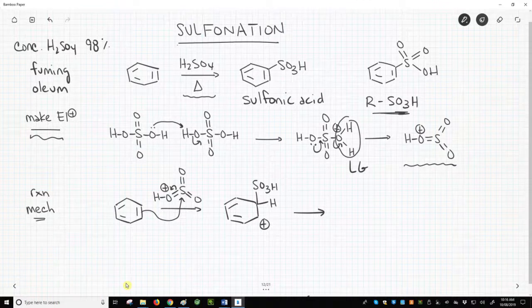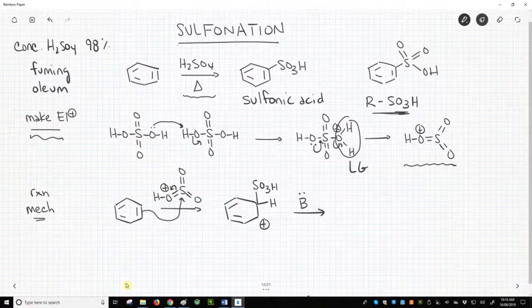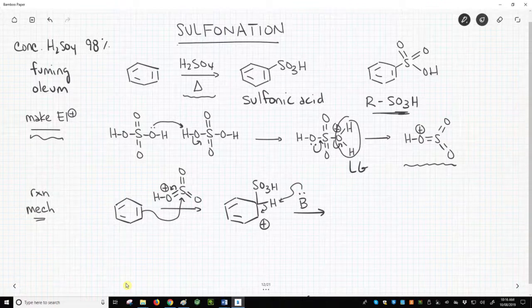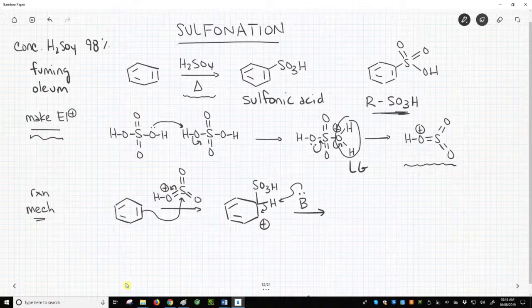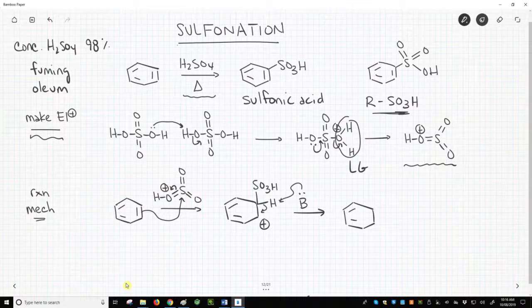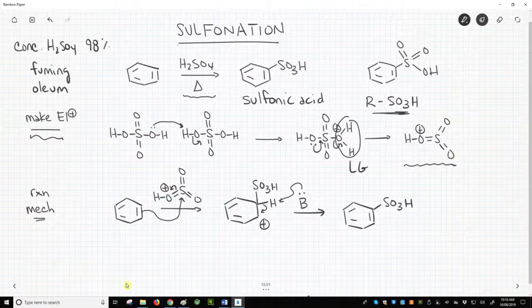A base, we'll use B as a base as usual in strongly acidic conditions, removes a proton that is beta to the carbocation to reform our aromatic ring in our product.